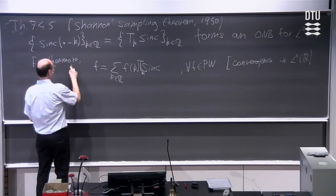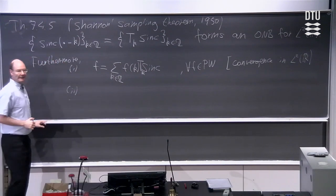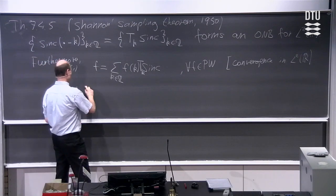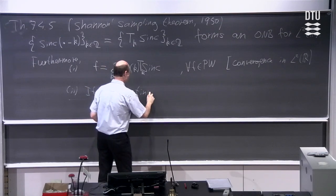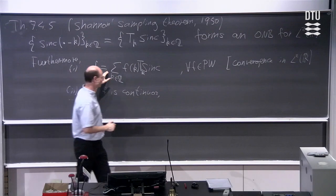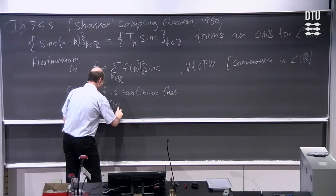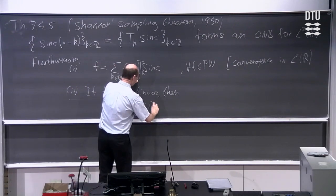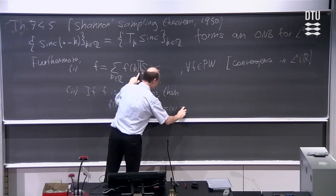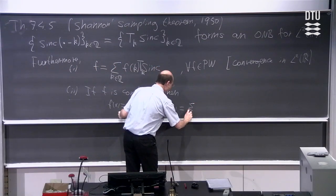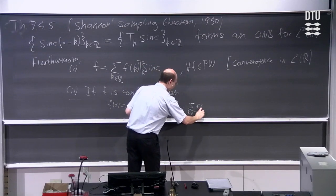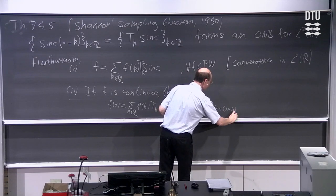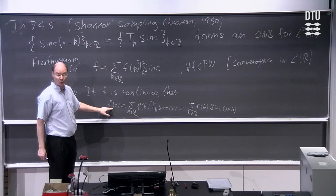There is another statement also. If the function is continuous, then we are actually allowed to put in x's in this relationship. So then we have f(x) equal to the sum over k in Z of f(k) times T_k sinc evaluated at x. We can write this explicitly as the sum over k in Z of f(k) times sinc(x − k). This relationship holds pointwise whenever you put in an x.